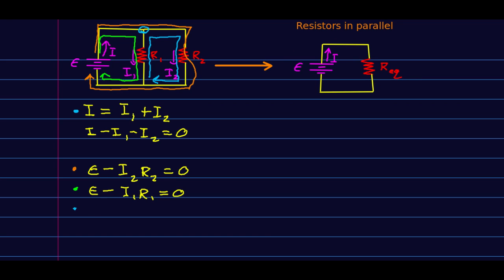And so going around this loop, we go up I1R1, but now we're going with the skiers through R2. So I2 minus I2R2. And there are all my loop laws for this circuit.